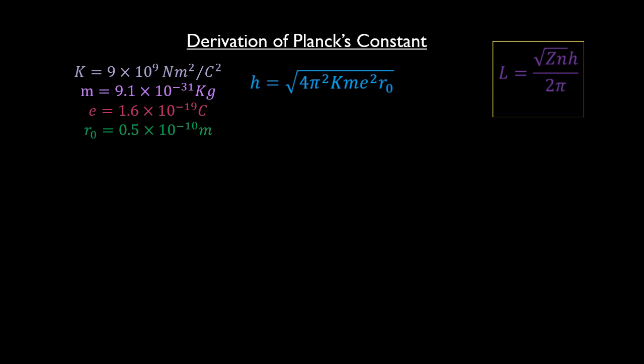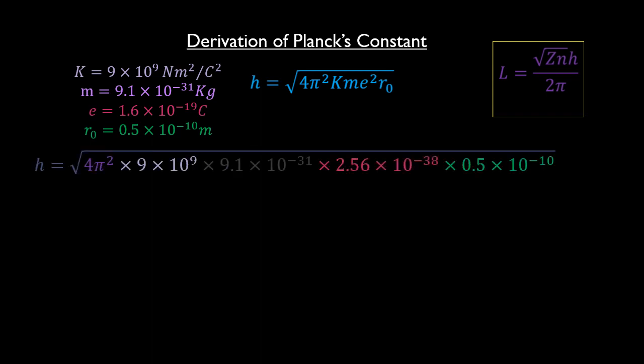You can do your own research to confirm that these values are correct. For the value of π, you can get it on your calculator. When we sub in these values into the blue expression for h like so, we get these. This is the value of Planck's constant.